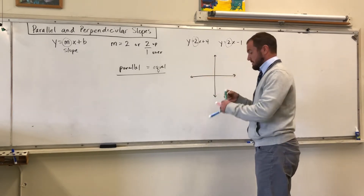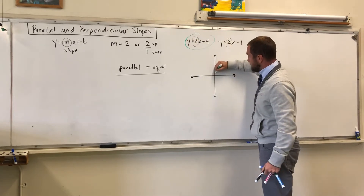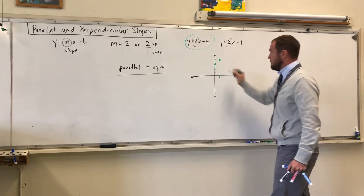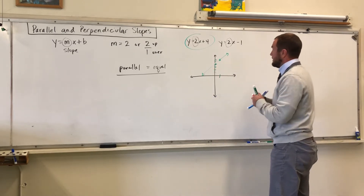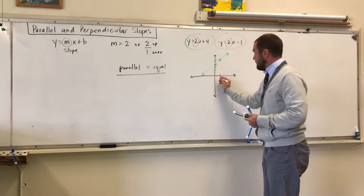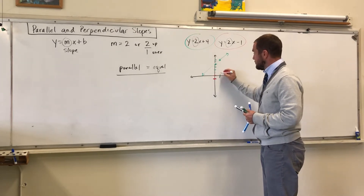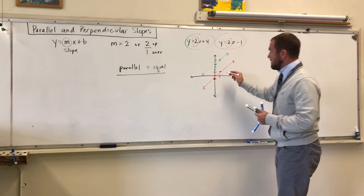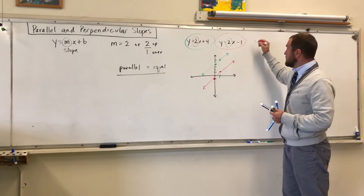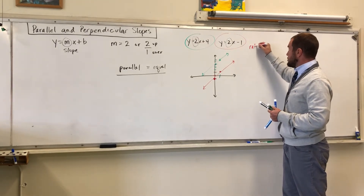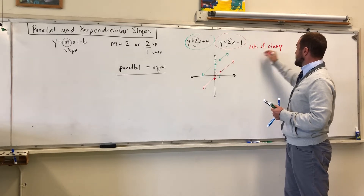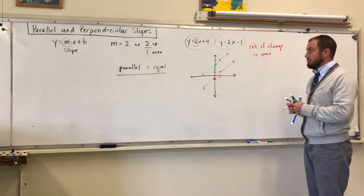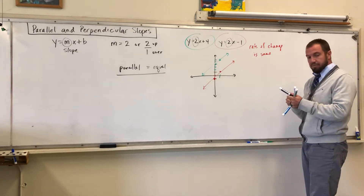If I'm to graph 2x plus 4 — we'll graph this in green — up 2 over 1, and I'm to graph this line in red, starting at my y-intercept of negative 1, and I'm going to go up 2 over 1, you can see that because my slope and the rate of change is the same, these lines will increase — or decrease if it were a negative slope — at the same rate, so that's going to cause them to be parallel.